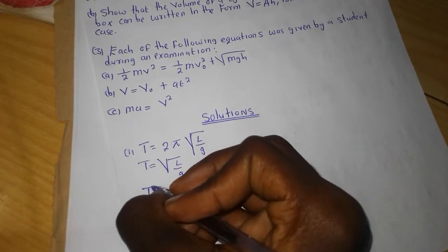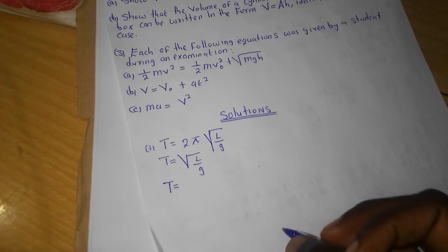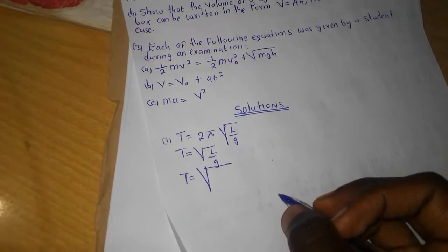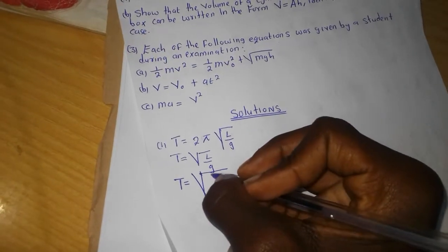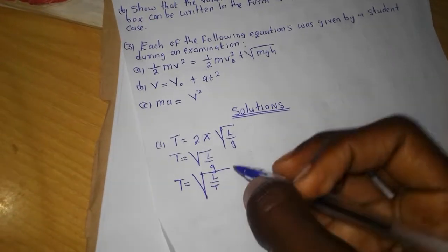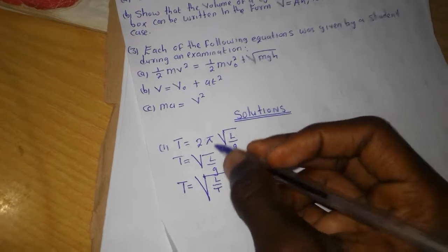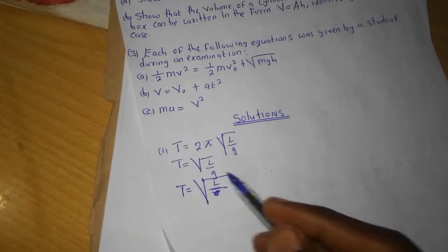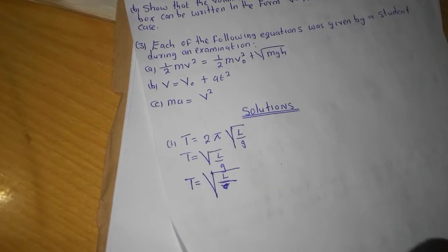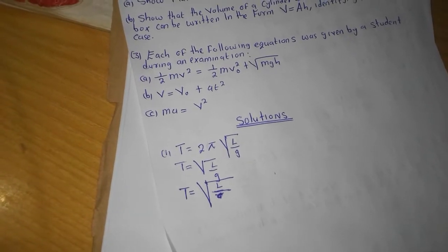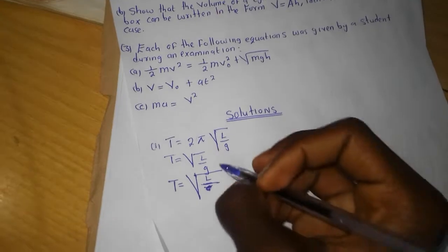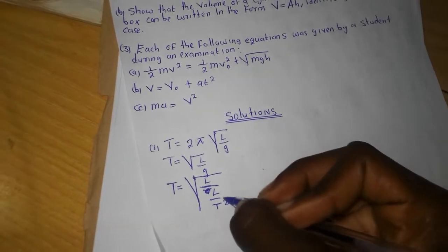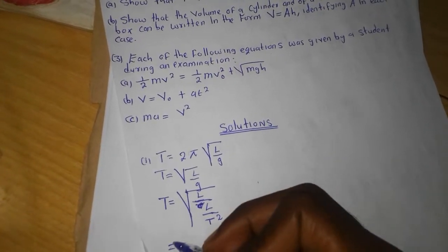We know that T is the period which represents time. This is the square root of L over G — the dimensions of length are simply L. This G is gravitational acceleration, and what are the dimensions of acceleration due to gravity? The dimensions are L over T squared.